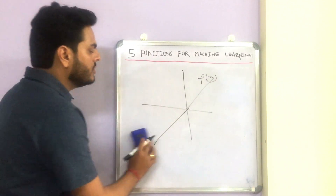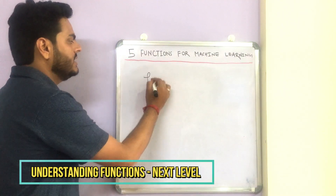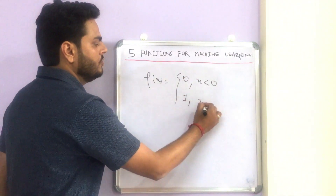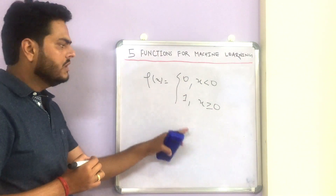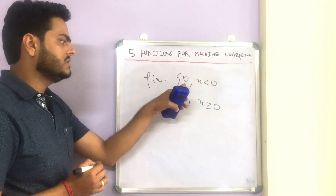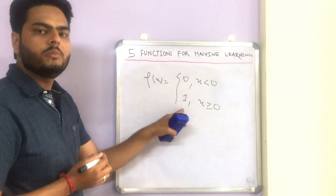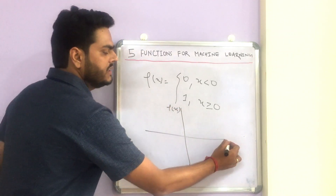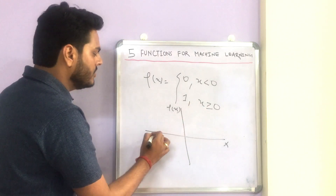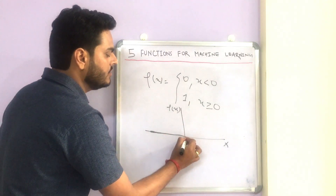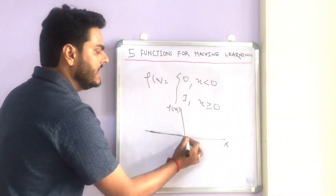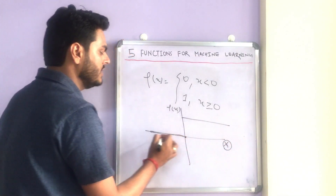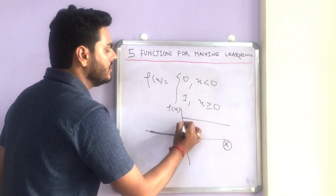A function can also be more complex. For example, a function can be written as f(x) = 0 when x is less than 0, and f(x) = 1 when x is greater than or equal to 0. This means whenever x is negative, the return value is 0, and whenever x is positive, the function returns 1. On the x-y plane, for all negative x values y will be 0, and once x becomes positive or greater than 0, y becomes 1.